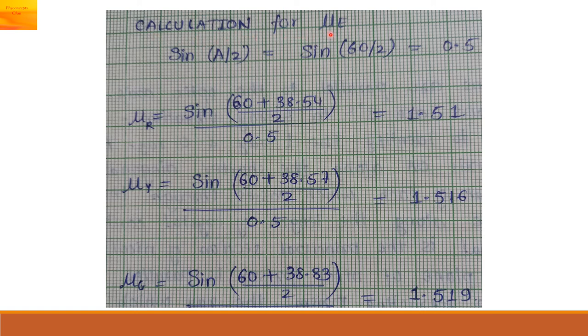This is the calculation part. After getting delta m, we put it in the formula. Delta, sin A by 2 where A angle of prism value is 60 degrees. So, sin of A by 2 is 0.5. So, that is substituted in the denominators. Delta m for the corresponding colors are substituted and we get the refractive index.